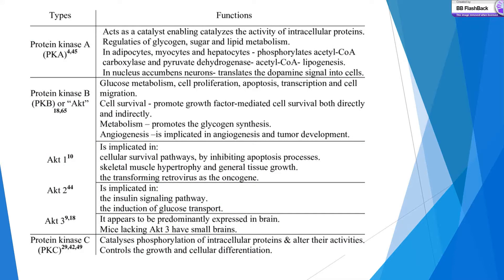There are many types of protein kinases: protein kinase A, protein kinase B, and protein kinase C. Protein kinase A acts as a catalyst, enabling catalytic activity of intracellular proteins; it also regulates glycogen, sugar, and lipid metabolism in adipocytes and hepatocytes. Protein kinase B, also known as Akt, includes Akt1, Akt2, and Akt3, each with different functions.